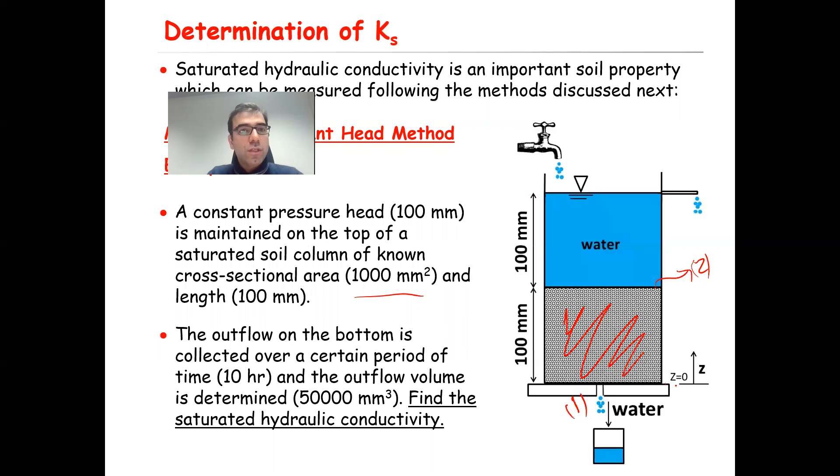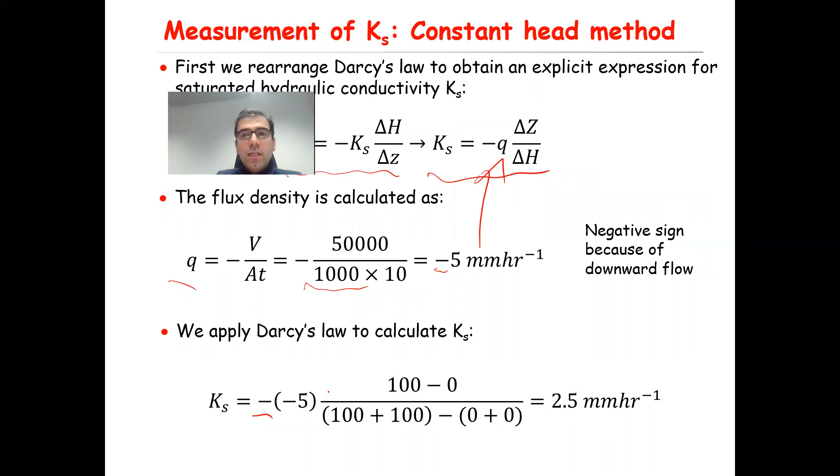At point one, z1 is equal to zero because it is defined at the reference level. And then z2 is equal to 100 because this is located 100 millimeters above the reference level. So therefore, delta z over delta h, I can write it as minus q times z2 minus z1 divided by h2 minus h1. So z2 is equal to 100, z1 is equal to zero. So now you need to calculate h2 minus h1.